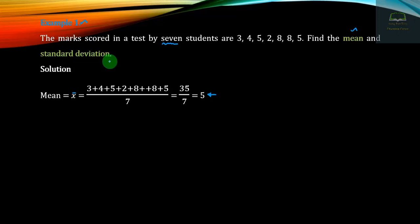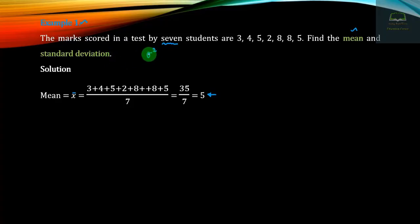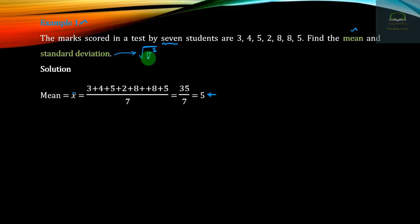The standard deviation is computed using the variance, sigma squared. We take the square root of the variance to obtain the standard deviation. The formula involves taking sigma squared, then applying the square root to get the standard deviation.